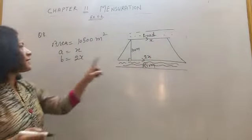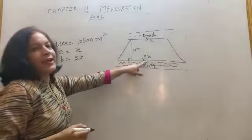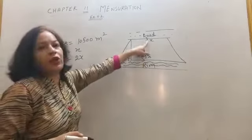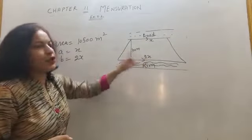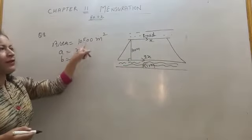So B is 2x. The side along the river is double the side along the road. So if it is x, then it is 2x. And you have given the area.